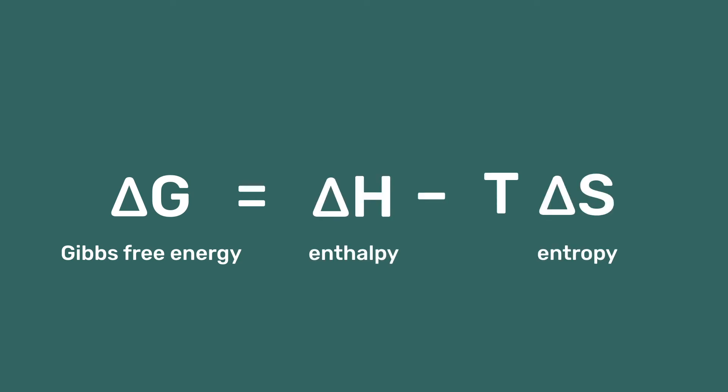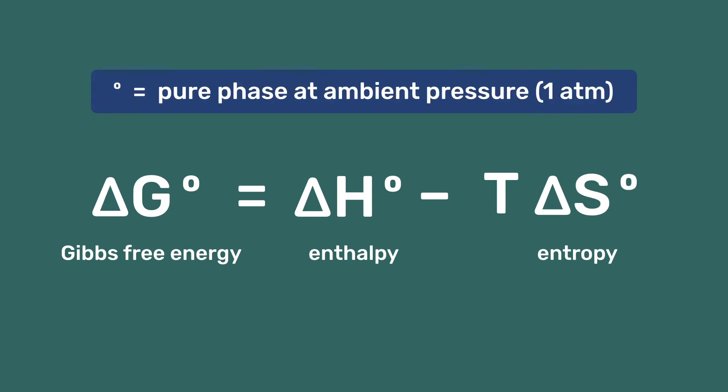In that video, we saw that ΔG is equal to ΔH minus TΔS. Here, we add a small circle as superscript to ΔG, ΔH, and ΔS to indicate that we are considering pure phases at ambient pressure.